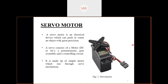A servo motor is an electronic device which can push or rotate an object with great precision. Servo motors are basically of two types: rotary actuator and linear actuator. A rotary actuator rotates the shaft at a fixed angle, and a linear actuator helps in fixed linear movement.